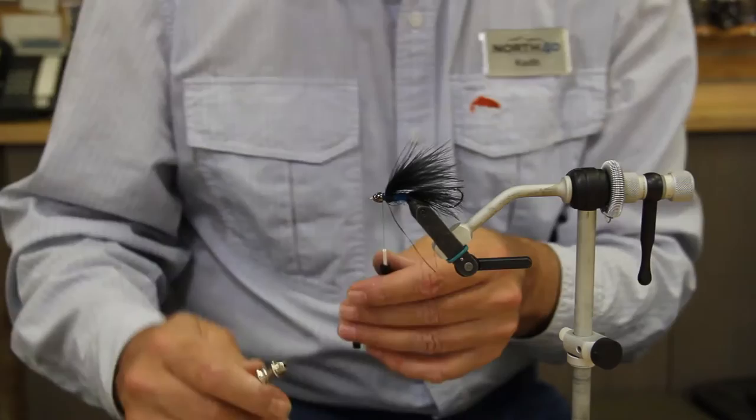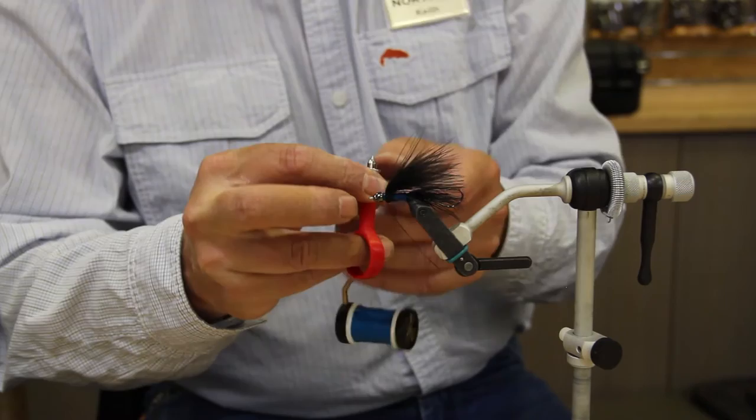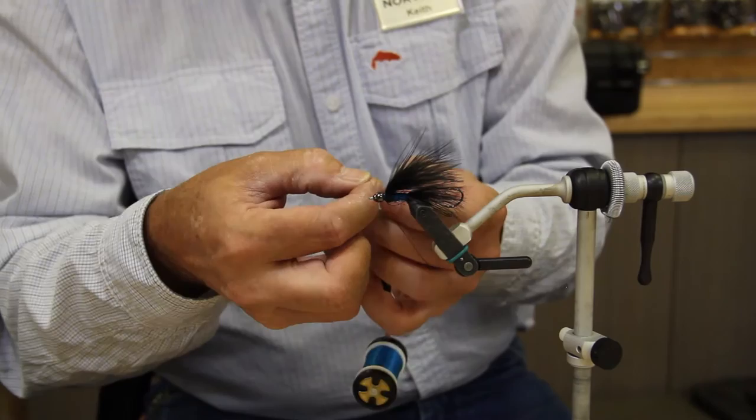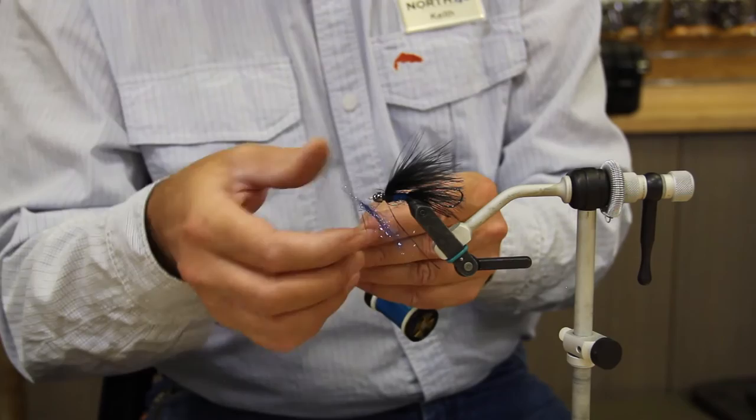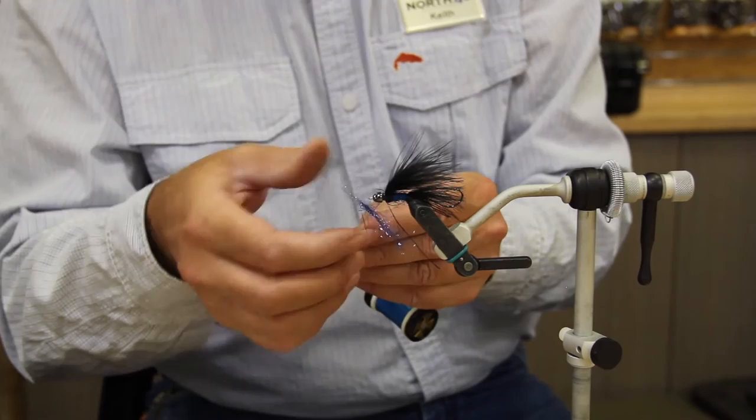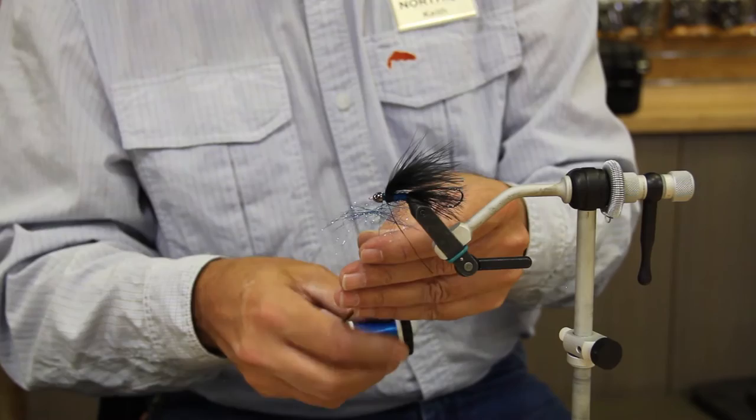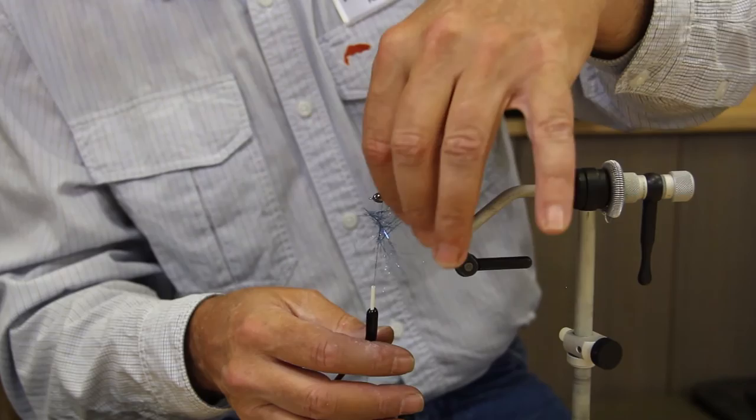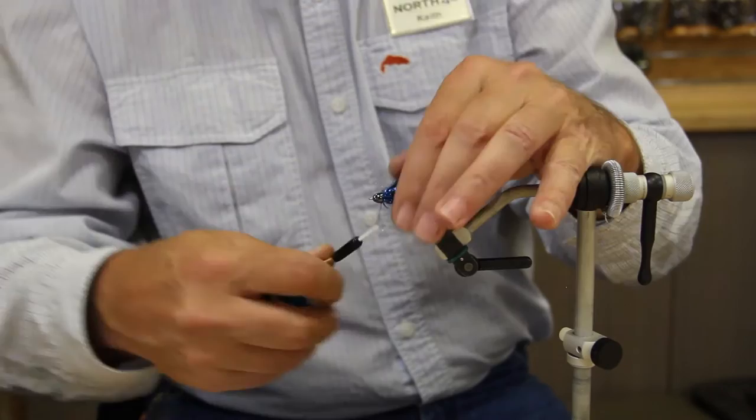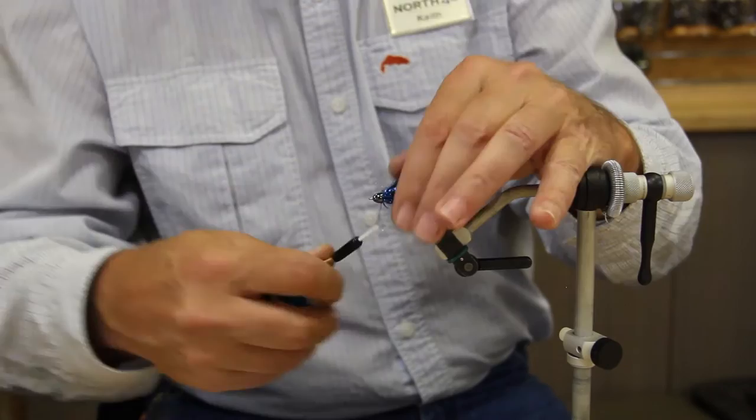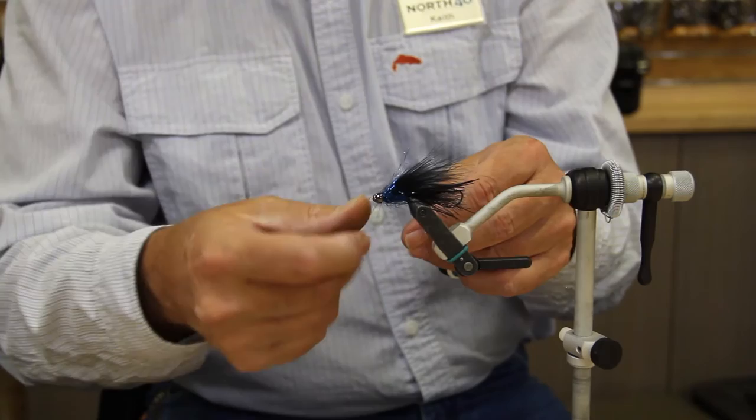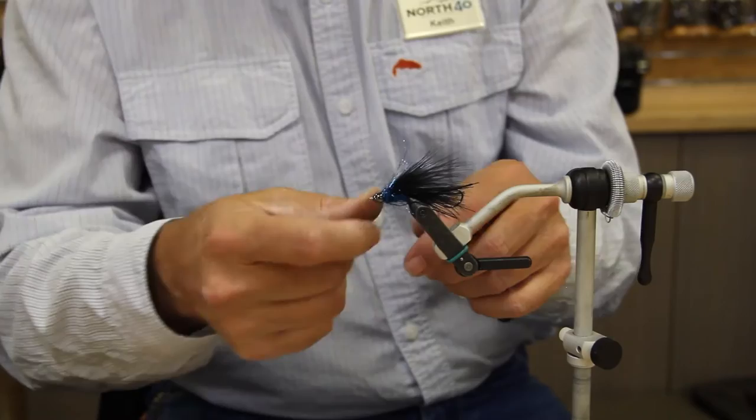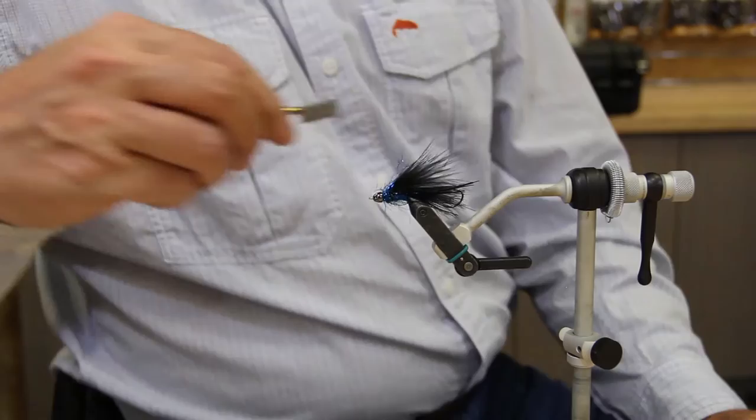We're going to take our handy little thread splitter here. Split our thread. Take some more of your blue ice dub. I'm not going to use a lot, just a little bit. I'm going to kind of spread that out a little bit. I'm going to give it a spin. Make sure everything's out of the way. And then we're just going to wrap that in front. Make sure you pull the fibers to the back. I like to do about two four-turn whip finishes. And one last little thing is I kind of like to brush these fibers back. They kind of flow.